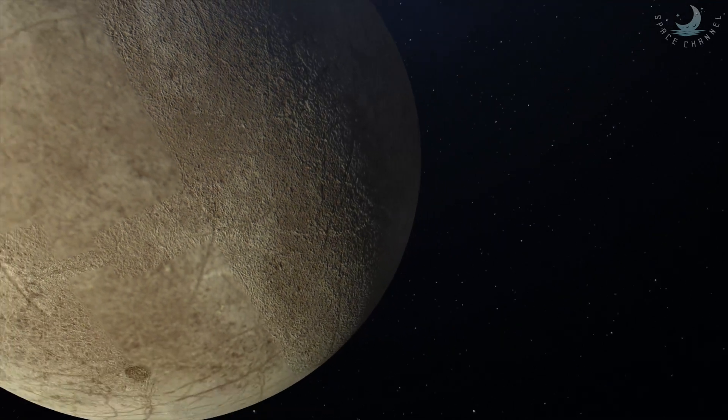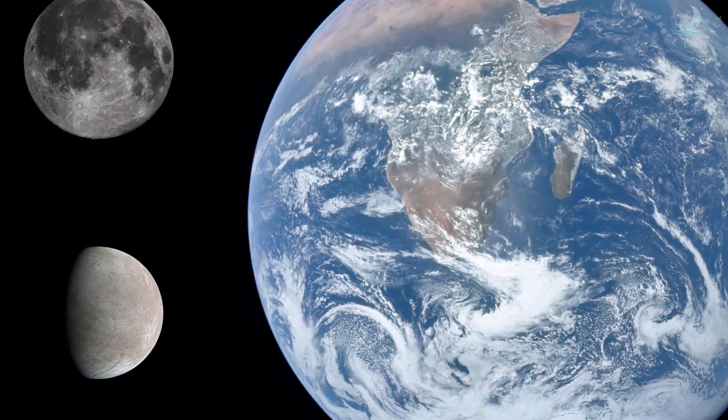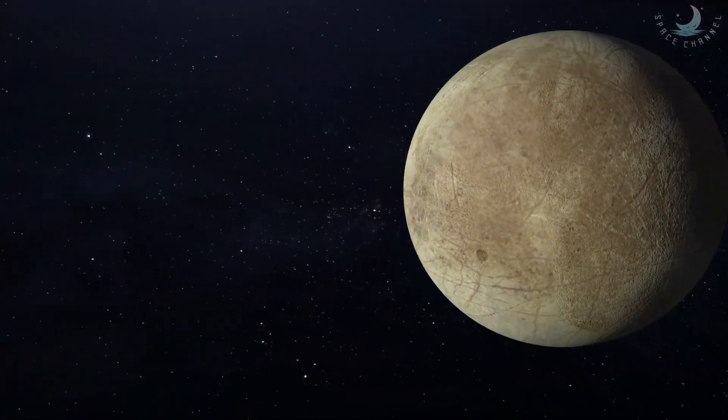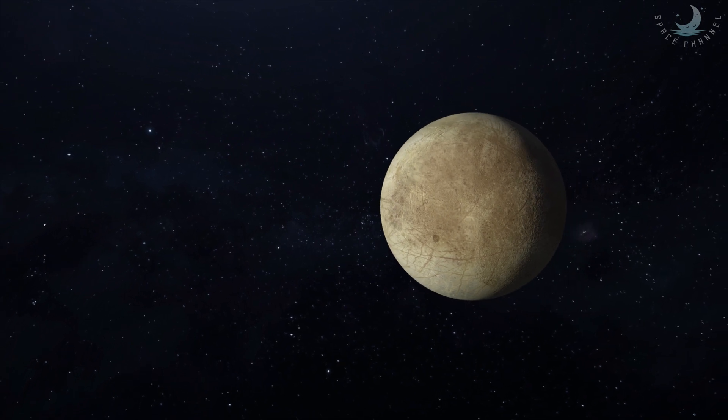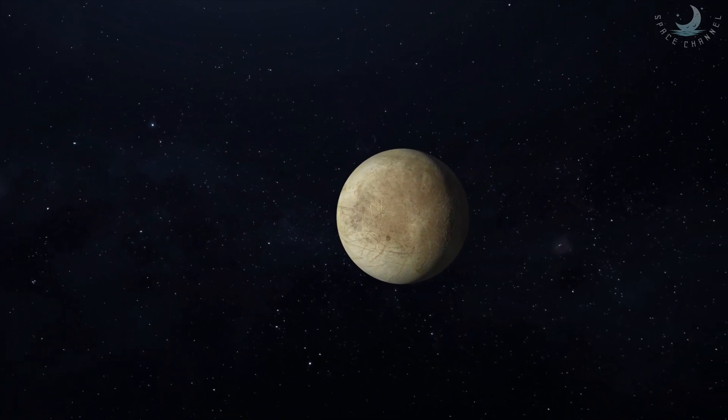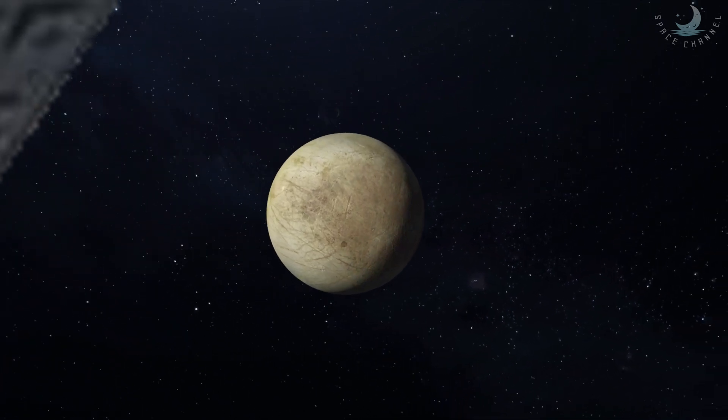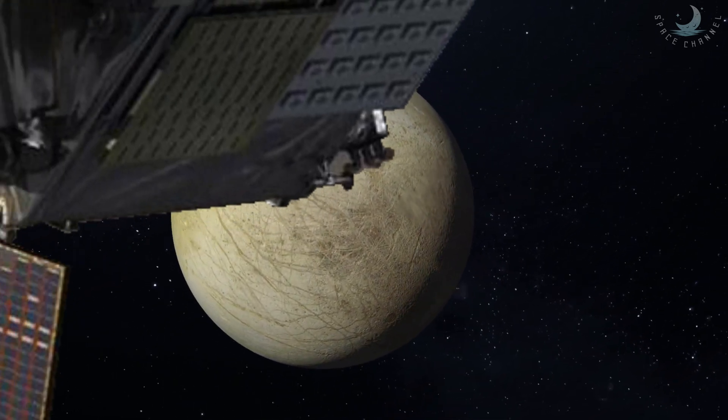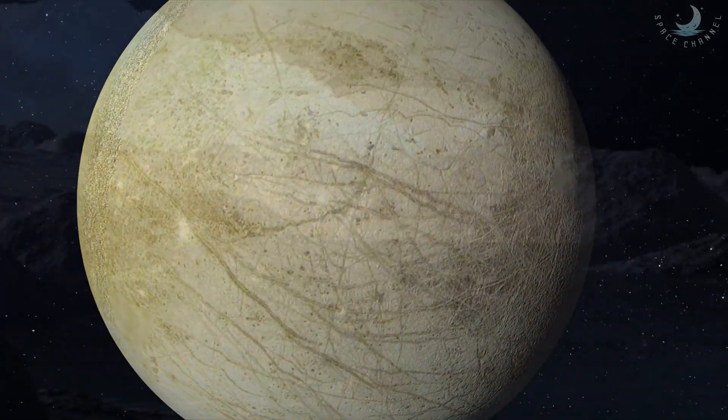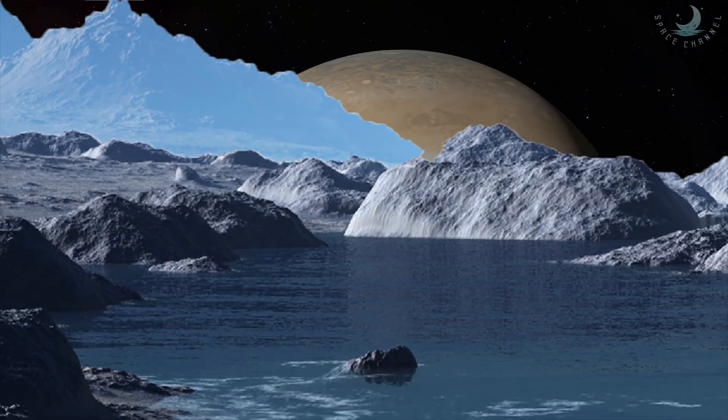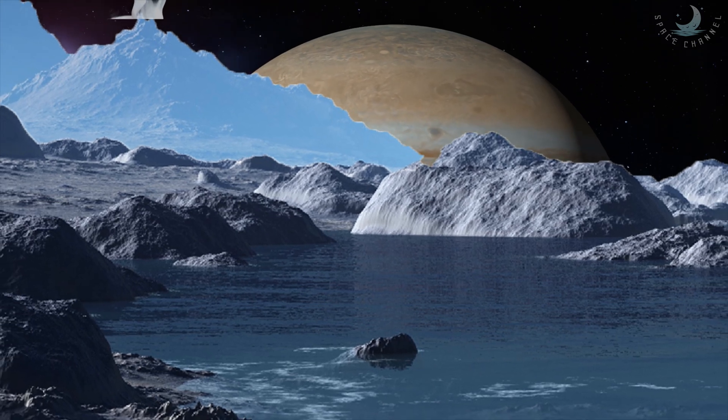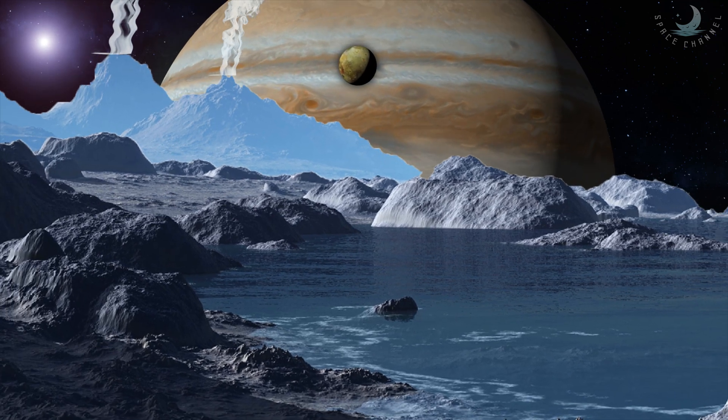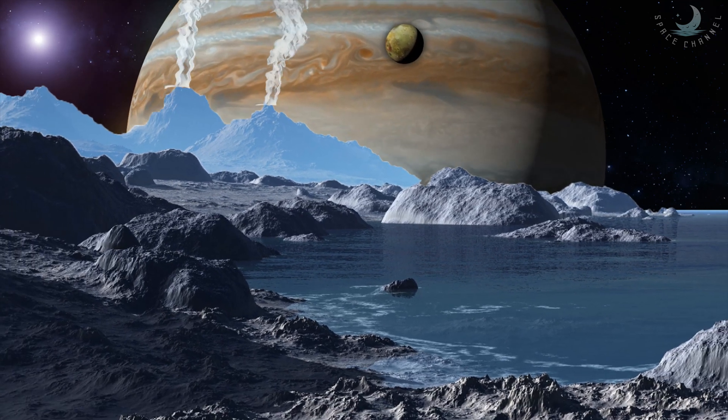At 2,000 miles wide, Europa is slightly smaller than Earth's moon. It is the sixth largest moon and 15th largest object in the solar system. It became a leading contender in the search for life elsewhere when observations from ground-based telescopes and passing space probes found evidence of a deep ocean 10 to 15 miles beneath its icy surface. Europa's ocean is estimated at 40 to 100 miles deep, so even though it is one quarter the width of Earth, it may hold twice as much water as all of Earth's ocean combined.